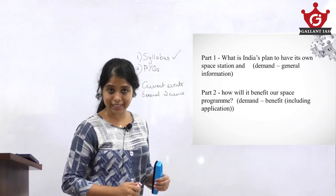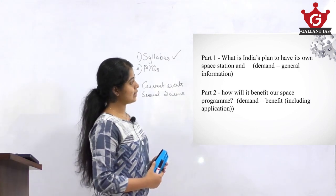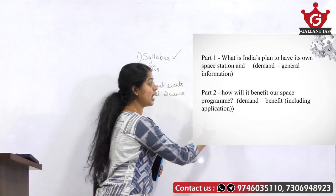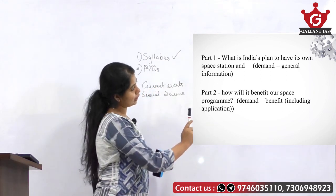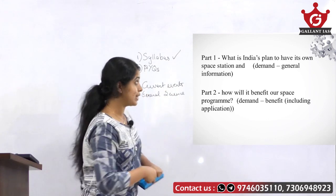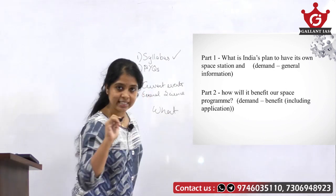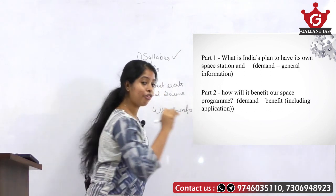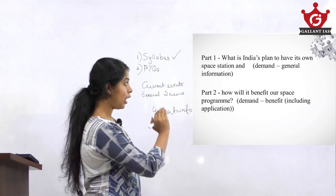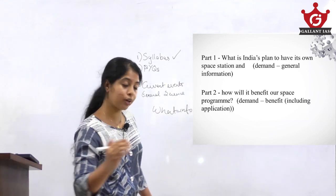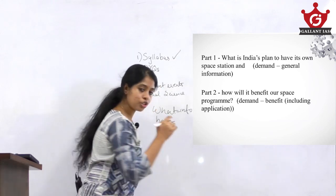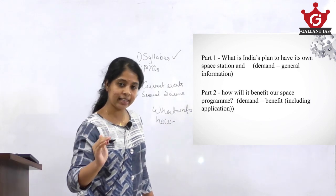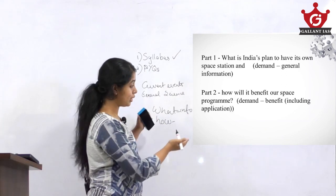The first question was asked in 2019 mains: 'What is India's plan to have its own space station, and how will it benefit our space program?' The first part — 'what' — demands relevant factual information. The second part — 'how' — checks your ability to analyze the advantages or benefits we reap after the space mission is completed.